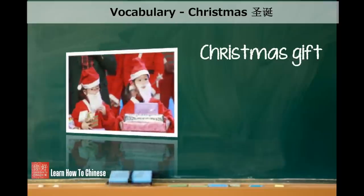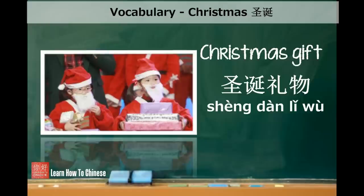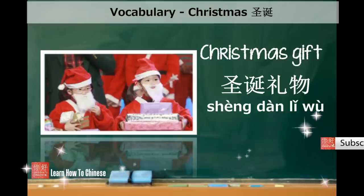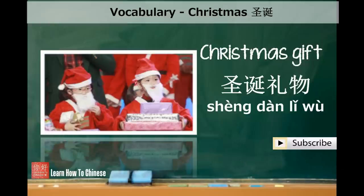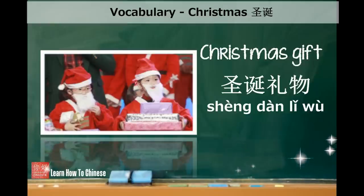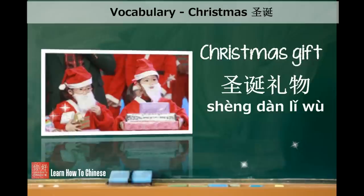What goes underneath the Christmas tree is the Christmas gift. Christmas gift in Chinese is called 圣诞礼物. 圣诞 is Christmas. 礼 means courteous and 物 means a thing. A gift is a courteous thing, so it is called 礼物. Christmas gift — 圣诞礼物.